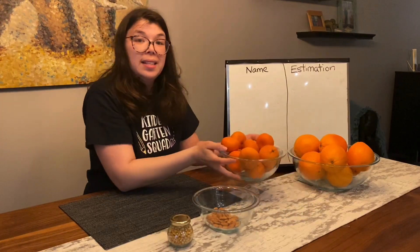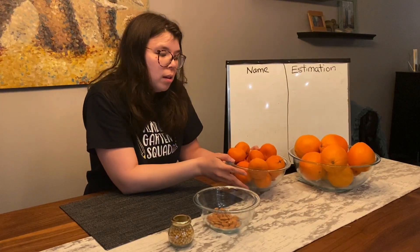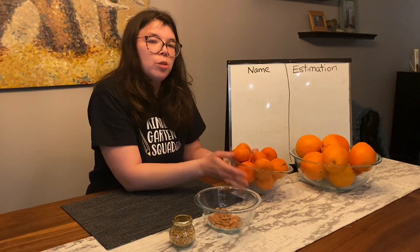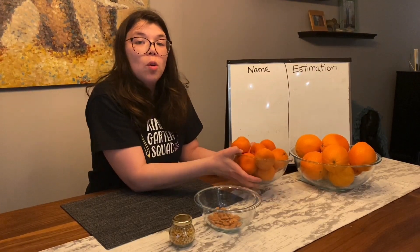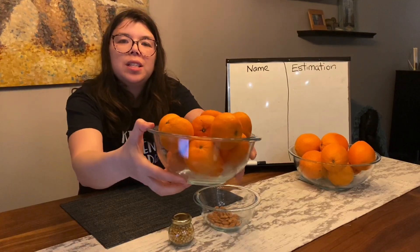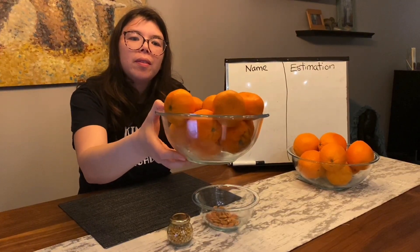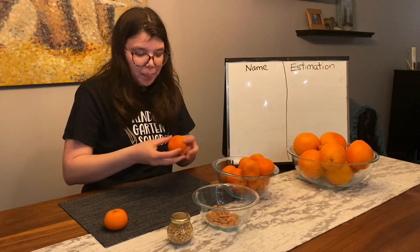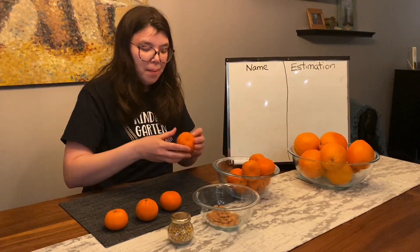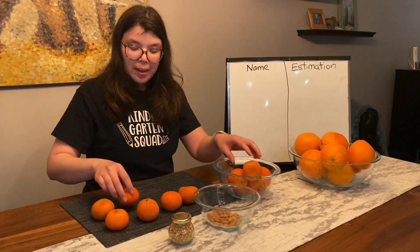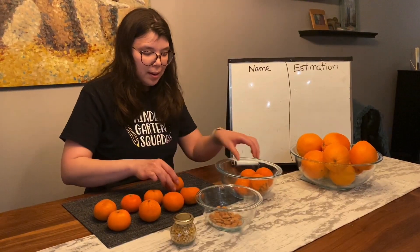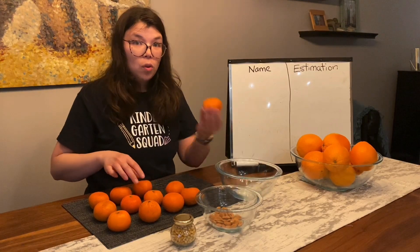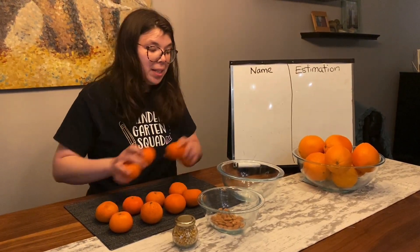My next bowl has clementines. As you can see, it's a smaller bowl, so some people might think that it has less, but because the clementines are smaller, they might actually have more. What's your estimate? How many clementines do you think are in this bowl? Let's count them: one, two, three, four, five, six, seven, eight, nine, ten, eleven, twelve. It looks like there were more clementines than oranges.